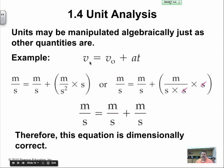Here's an example of how we can manipulate algebraically to find the quantities we're looking for. Here is a kinematic equation for final velocity: v = v₀ + at. Each one of these measurements has a unit that can be analyzed. Velocity is meters per second, and acceleration would be meters per second squared, and time is measured in seconds.